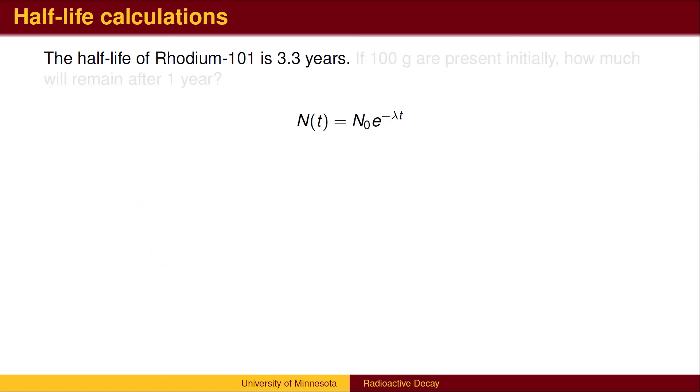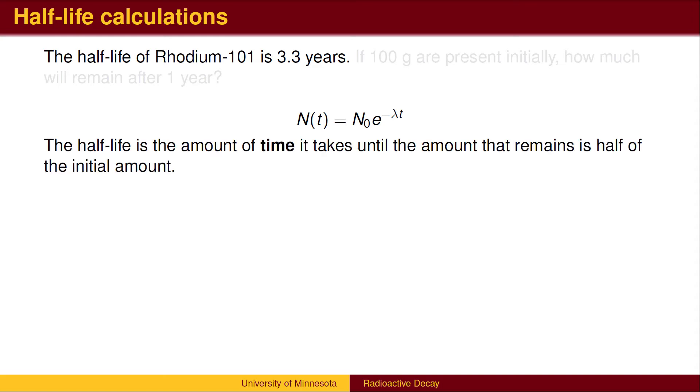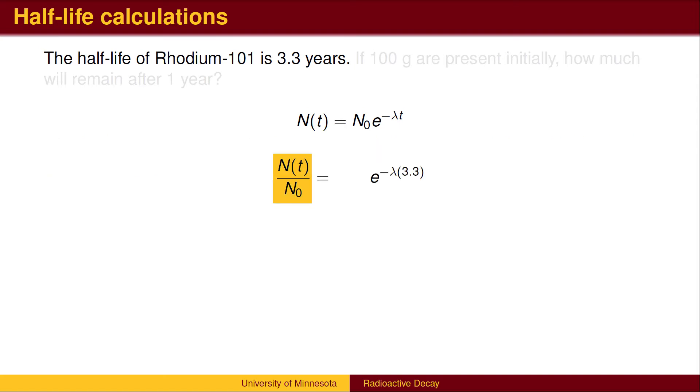The first thing we need to deal with is the concept of half-life. The half-life is the amount of time it takes until half of the radioactive material remains. Dividing both sides by the initial amount, the left-hand side becomes the amount remaining divided by the initial amount. We want this quantity to be one-half. Note that it doesn't matter what number of grams we started with. All that is important for half-life is the ratio of what remains to what we started with. The half-life is the time until half remains.